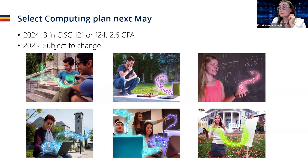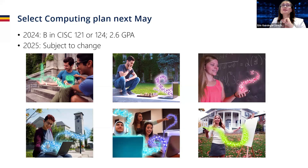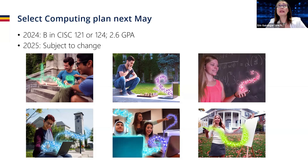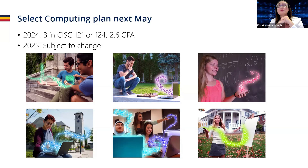Regarding acceptance thresholds: from 2024, to get into a computing plan automatically this past spring, you needed a B in CISC 121 or 124 and a 2.6 GPA. That is a hard line in SOLUS — if you do not meet those criteria, you will not get in automatically. So it's really important to focus on getting good grades in CISC 121 and/or 124, as that material is core to everything else your studies will be built on.